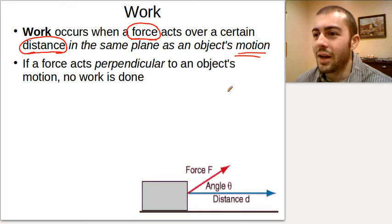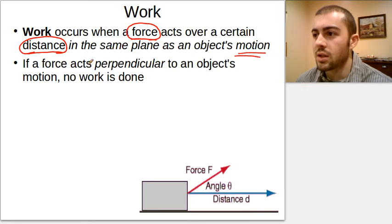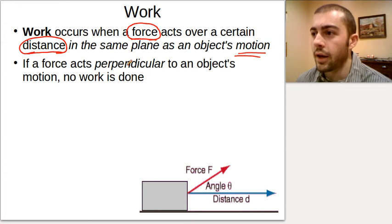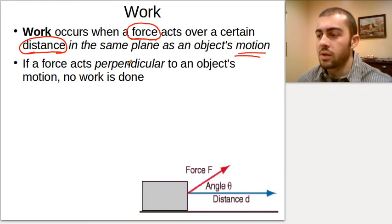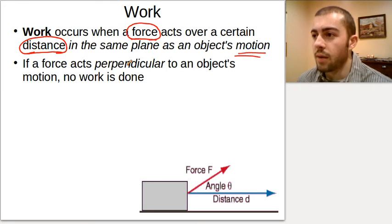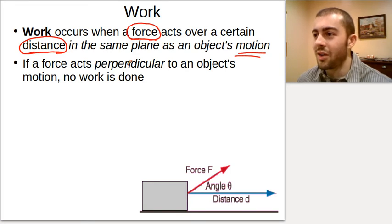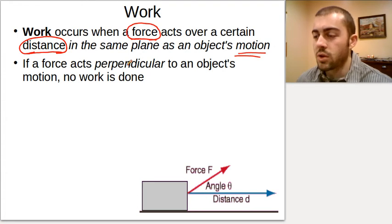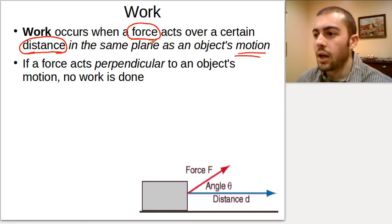Work would be done if both a force and distance are present. So if an object is moving on its own without a force acting on it — like a baseball thrown by a pitcher — if we ignore air resistance and gravity, no work is done on the object. If we throw a baseball where there's no gravity and no air resistance, there would not be any work done on the ball because you need a force to act in order to have work done.